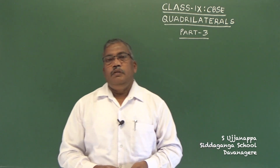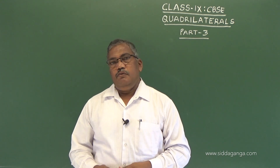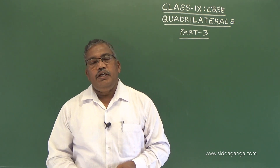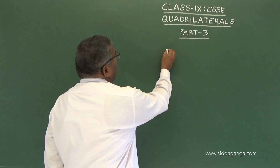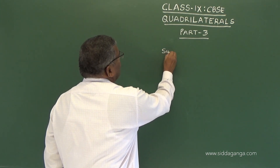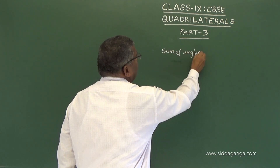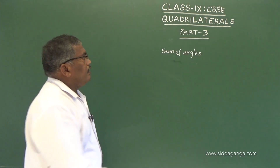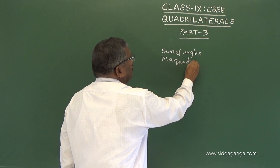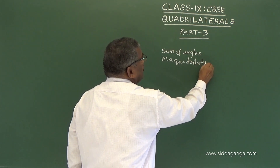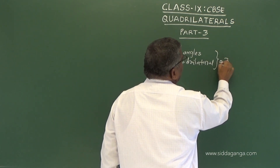Hi students. In the previous class, we were discussing about properties of quadrilaterals. There we heard that the angle sum property of quadrilaterals states that the sum of angles in a quadrilateral is equal to 360 degrees.